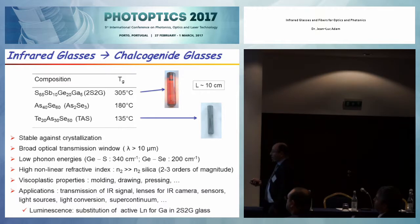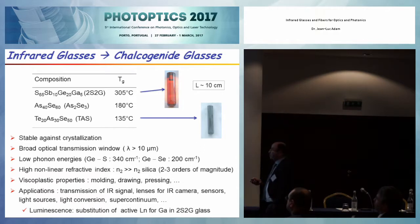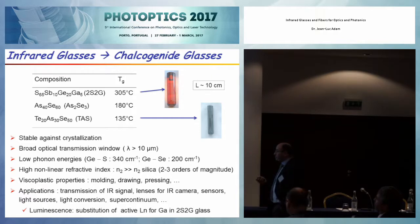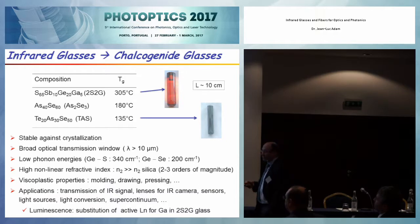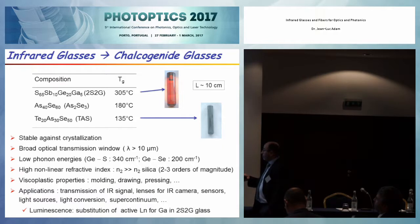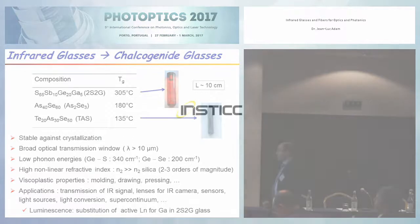These glasses also have a very high nonlinear refractive index — typically two to three orders of magnitude higher than that of silica. As they are very stable, they have very nice viscoplastic properties, so they can be molded, drawn, pressed, deposited as thin films, and so on, which opens possibilities for several kinds of applications: transmitting infrared signals, preparing lenses for infrared cameras, specific sensors, new light sources in the infrared, and also applications exploiting their nonlinear properties.